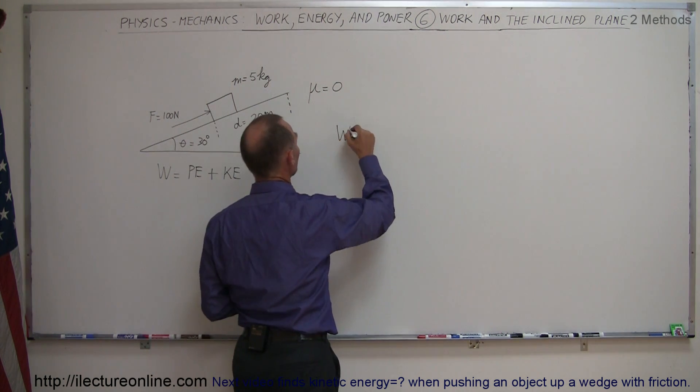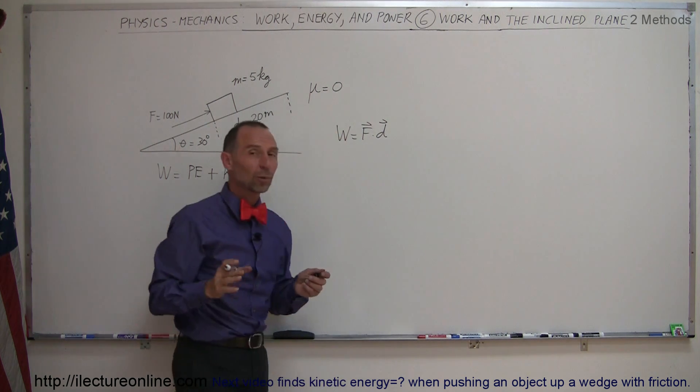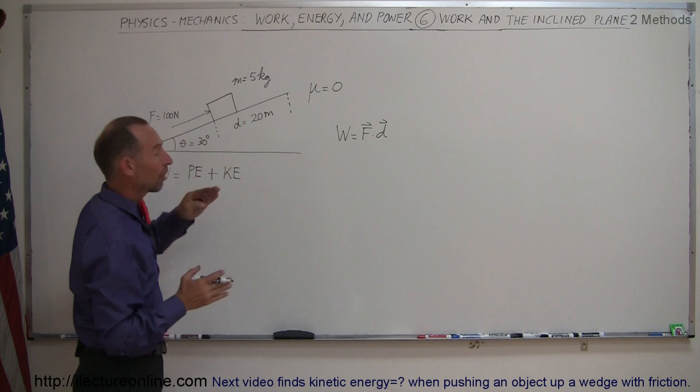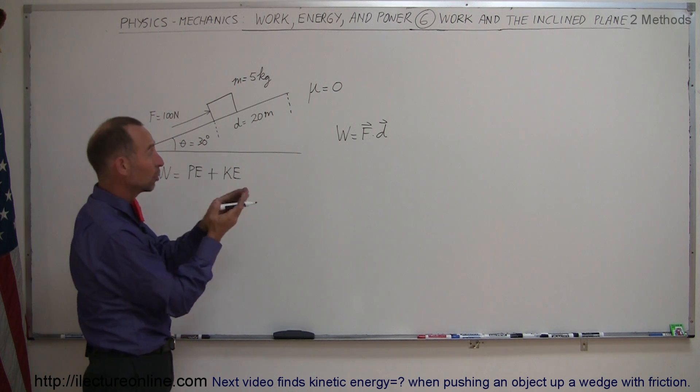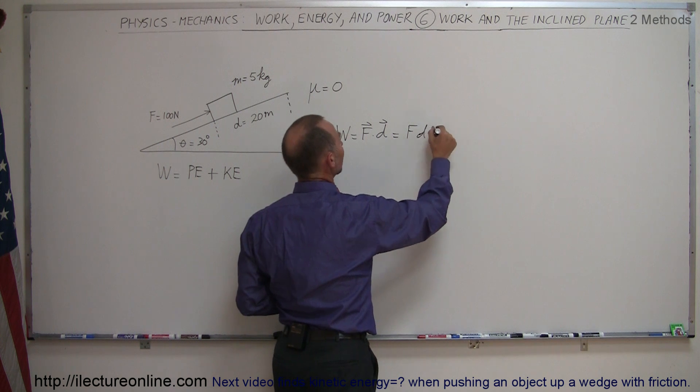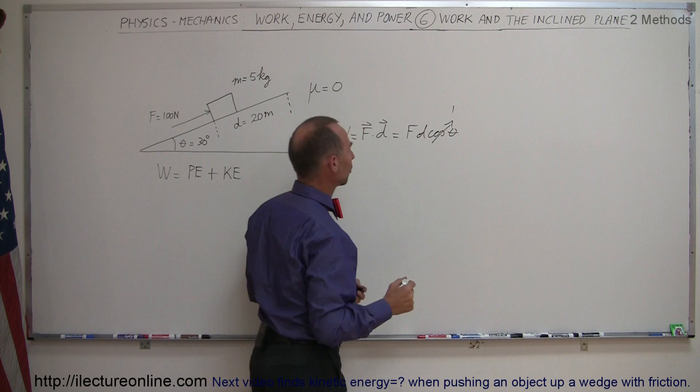Work done by definition is equal to force times distance, they're both vector quantities, so we use a dot product. Notice that the displacement and the force are pointing in the same direction, so the angle between them is zero, because you know that this is equal to f times d times the cosine of the angle between them, which is one, so we don't have to worry about that.